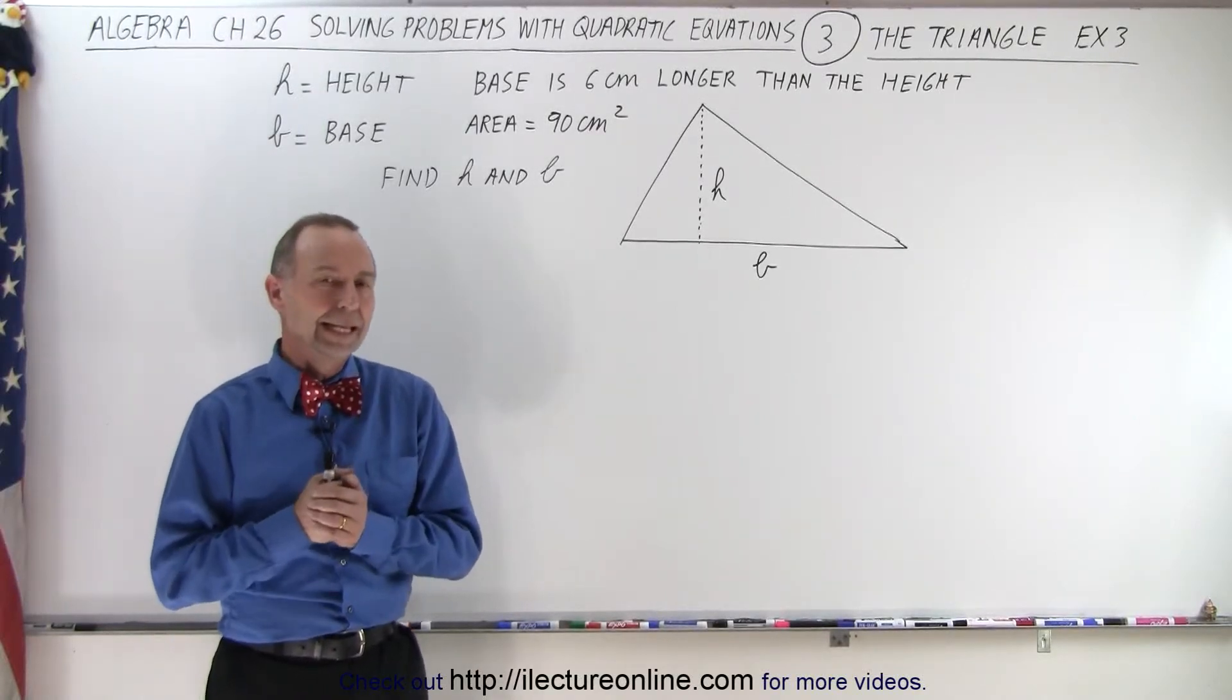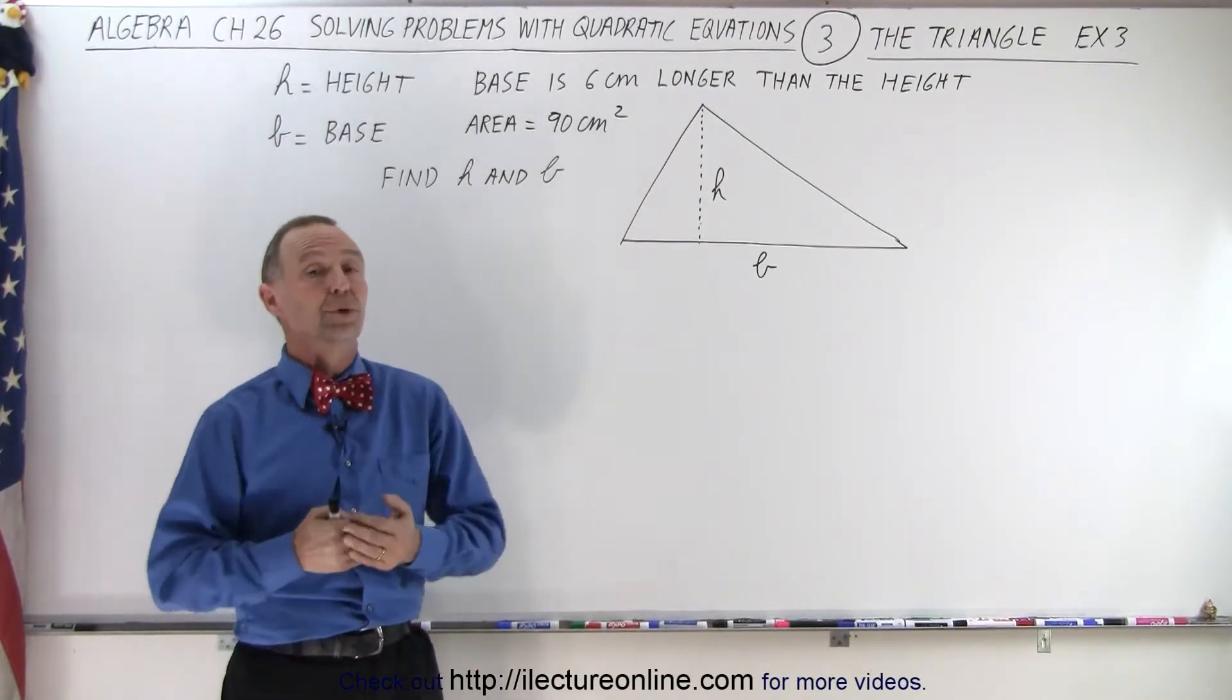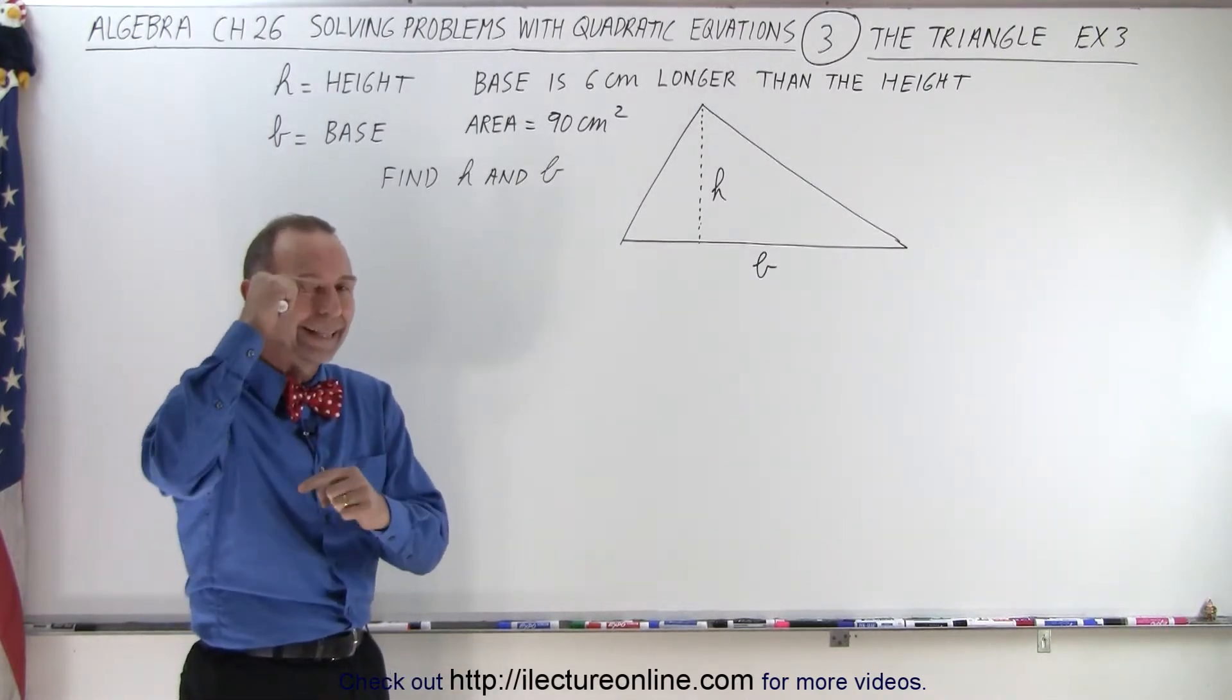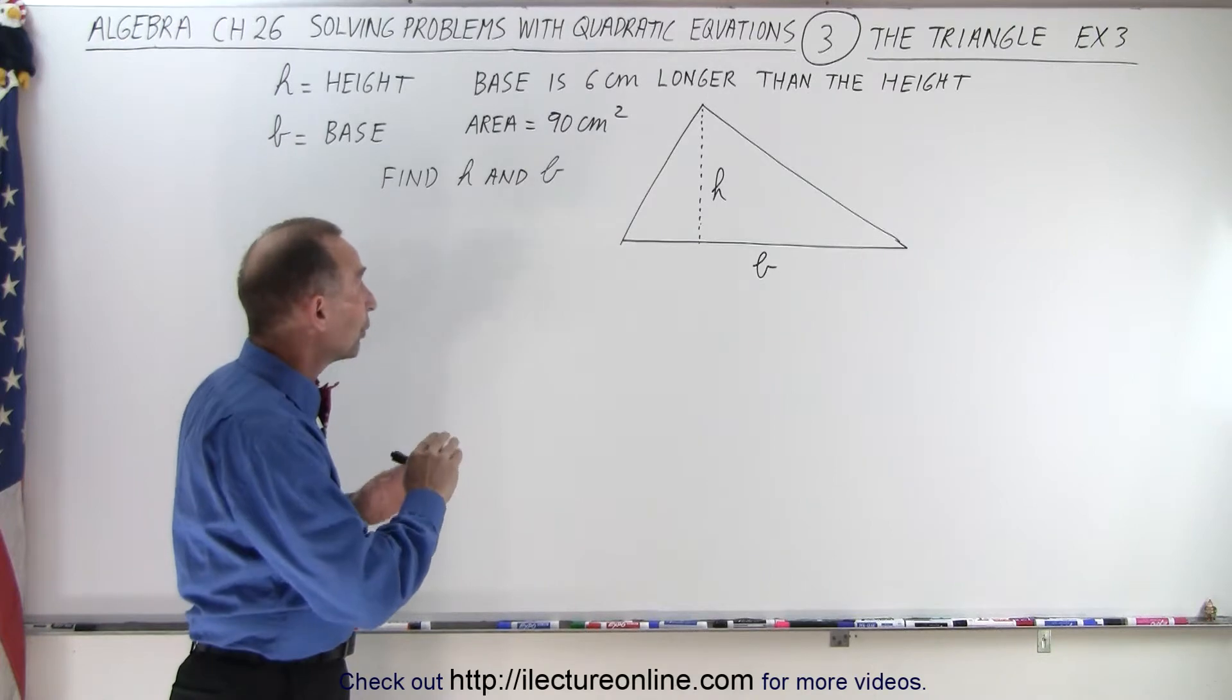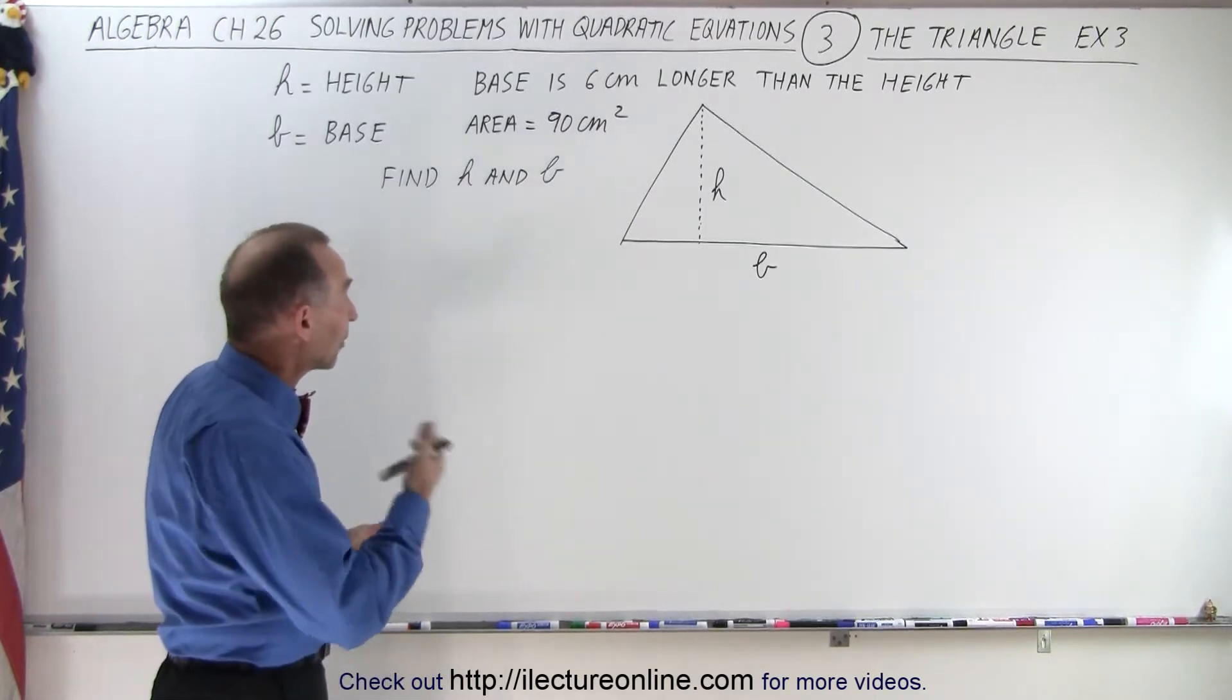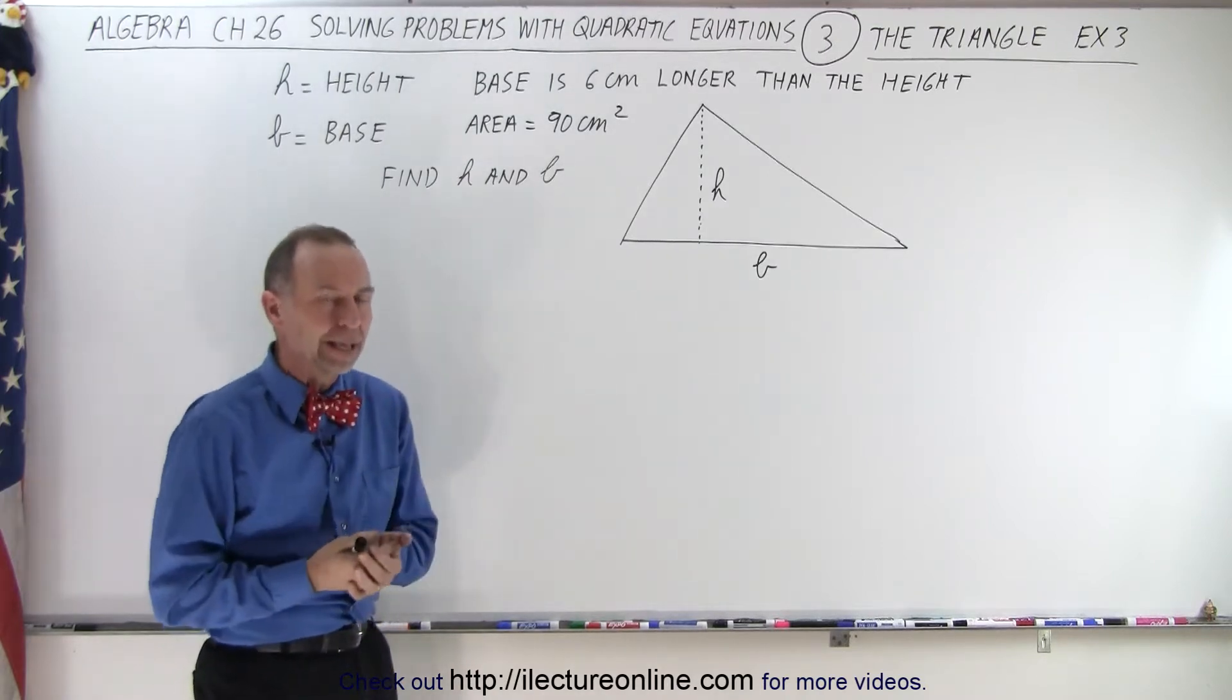Welcome to our lecture online. Here we're given a triangle and we're told that the base is 6 centimeters longer than the height, and we're also told that the area of the triangle is equal to 90 square centimeters. They ask us to find the height and the base.